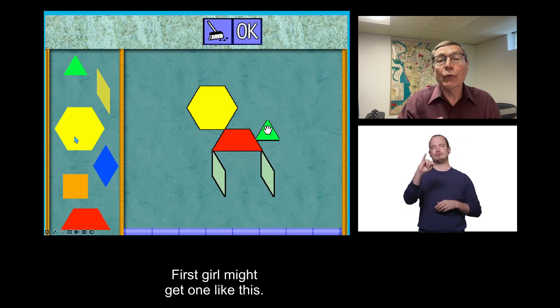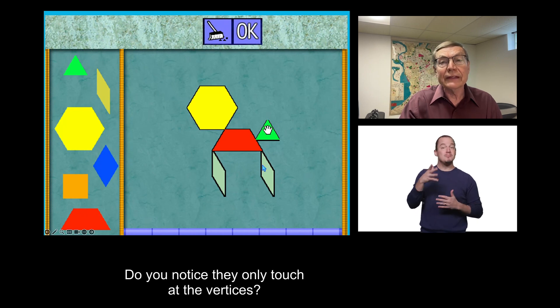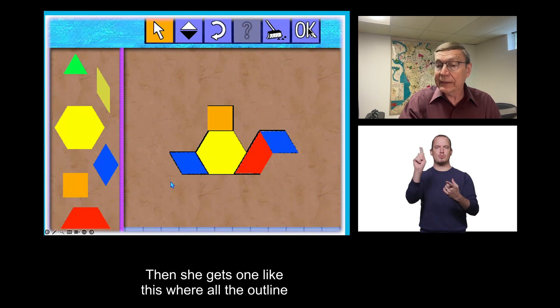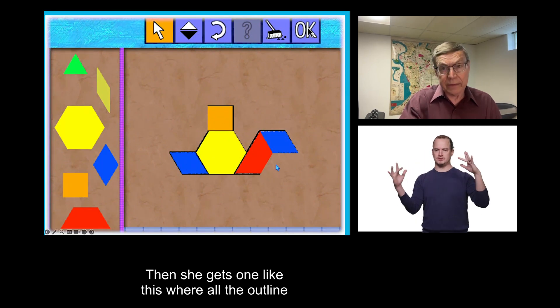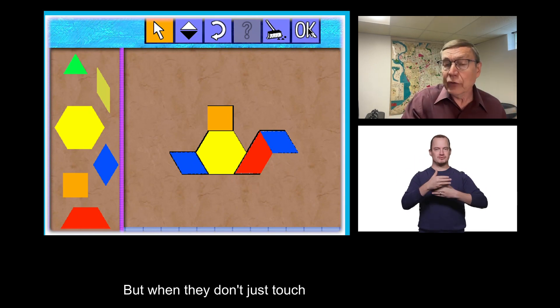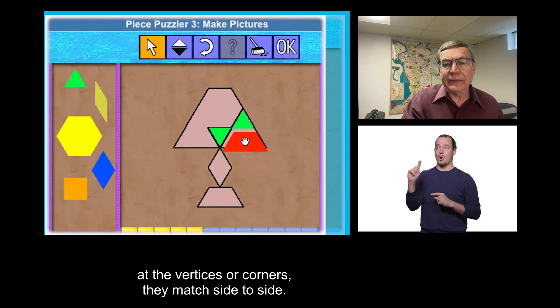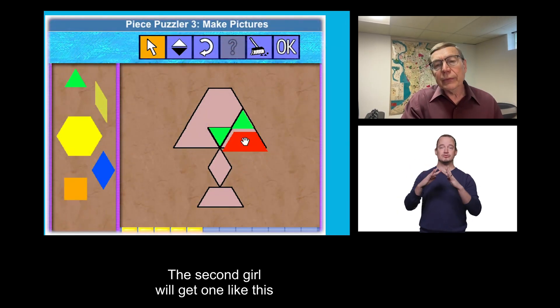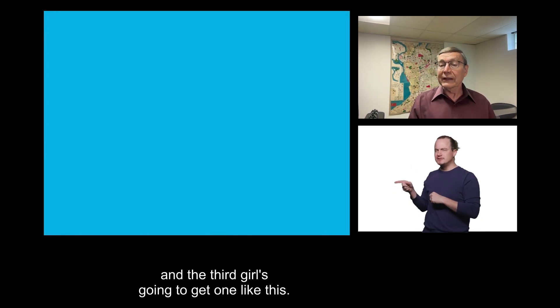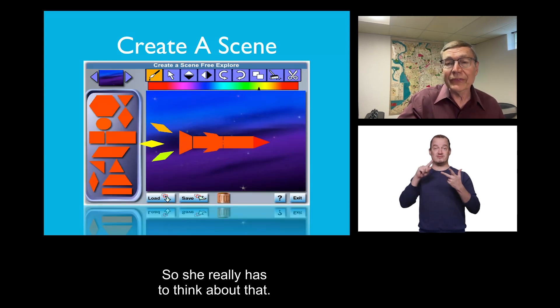So, once again, let's go through the levels. First girl might get one like this. Do you notice they only touch at the vertices? Really helps her match those shapes. Then she'd get one like this, where all the outline of the puzzles is there to help her match. But when they don't just touch at the vertices or corners, they match side to side. The second girl will get one like this, where you really have to start composing, and the third girl's going to get one like this. So, she really has to think about that.